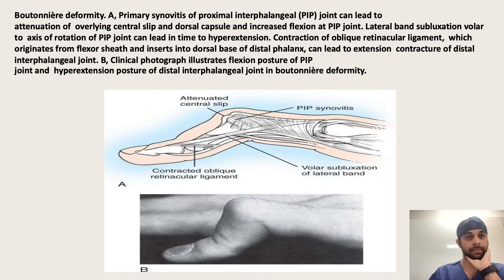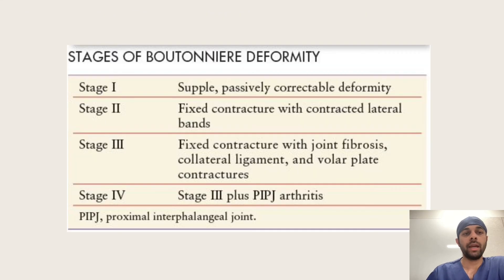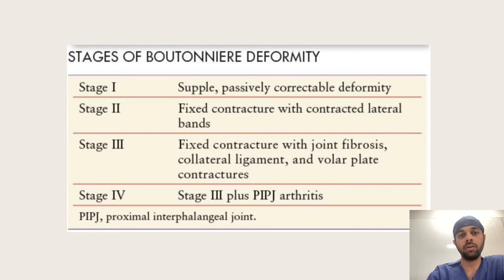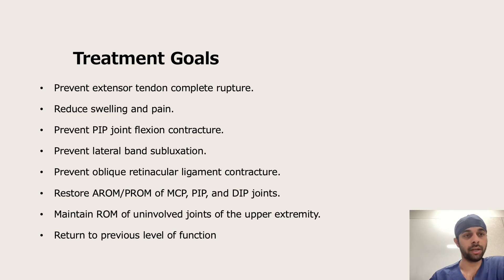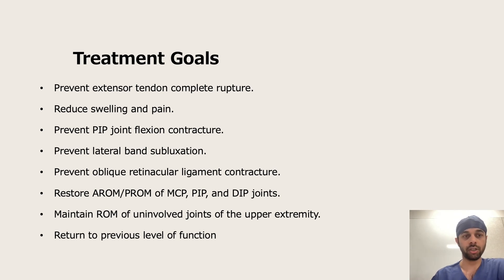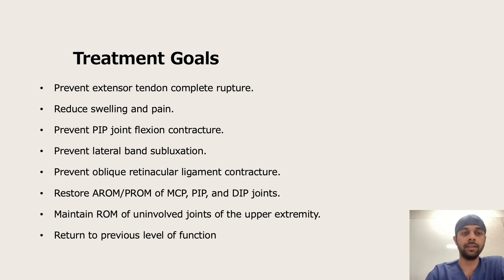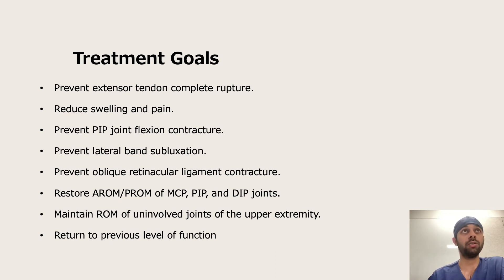Synovitis can also lead to boutonnière deformity. The stages are: Stage 1 — supple and passively correctable. Stage 2 — fixed contracture with contracted lateral bands. Stage 3 — fixed contracture with joint fibrosis, collateral ligament fibrosis, and volar plate contractures. Stage 4 — PIP arthritis, including all components of Stage 3. Our aims for treating both deformities include: preventing complete extensor tendon rupture, reducing swelling and pain, preventing PIP joint flexion contracture, preventing subluxation, preventing oblique retinacular ligament contracture, restoring active and passive range of motion of all joints, and returning the patient to their previous level of function.